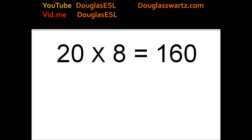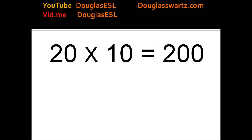20 times 8 equals 160. 20 times 9 equals 180. 20 times 10 equals 200.